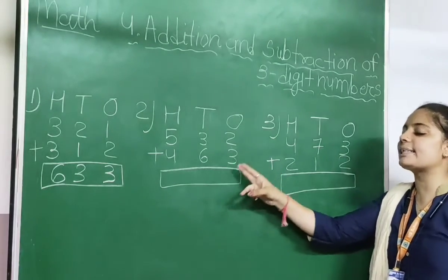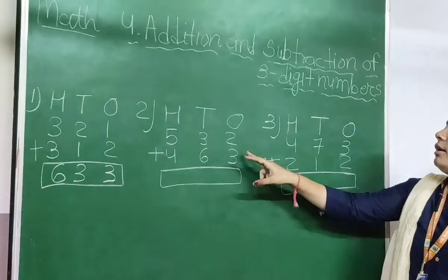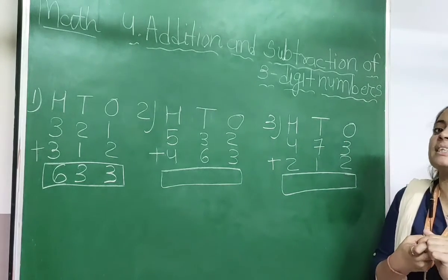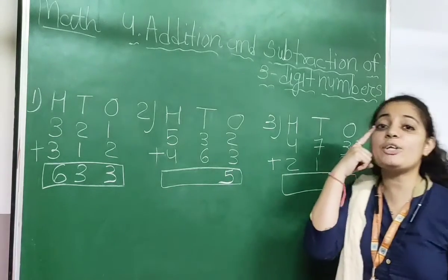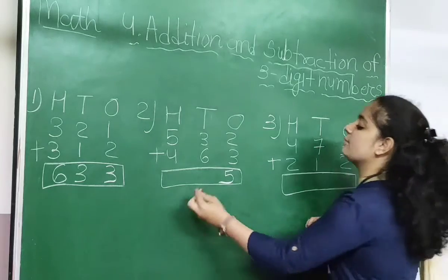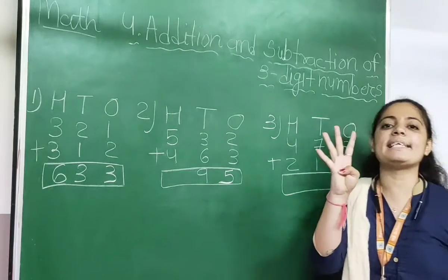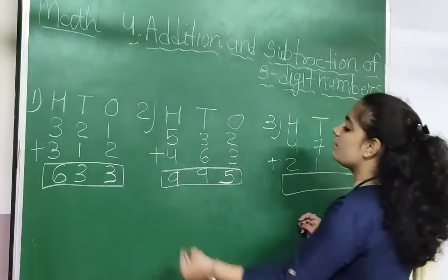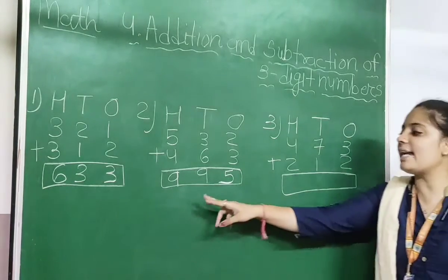Next, 532 plus 463. In the 1s column: keep 3 in your mind, do 2 fingers, count after 3 — 4, 5. So 3 plus 2 is 5. In the 10s column, 3 plus 6: keep 6 in your mind, do 3 fingers, count after 6 — 7, 8, 9. Then 5 plus 4 in the 100s column: keep 5 in your mind, do 4 fingers — 6, 7, 8, 9. So our answer is 995.